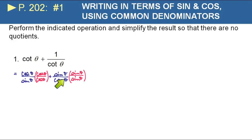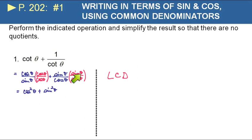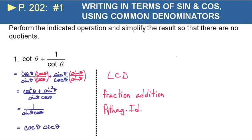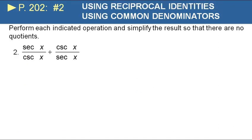If we get common denominators, the common denominator would be sine times cosine. This one needs a cosine and this one needs a sine. Now the denominators are the same — cosine times cosine is cosine squared and sine times sine is sine squared — and we put them over that one common denominator. Cosine squared plus sine squared equals one, so we've got one over sine times cosine. Using reciprocal identities, sine in the denominator becomes cosecant and cosine in the denominator becomes secant, so we end up with cosecant times secant.